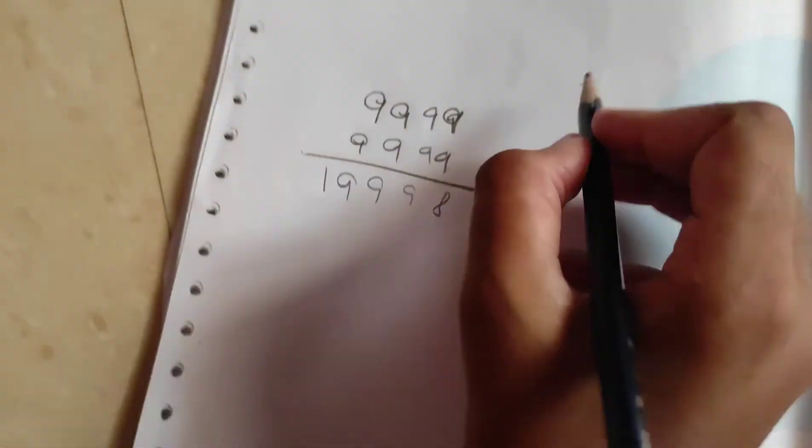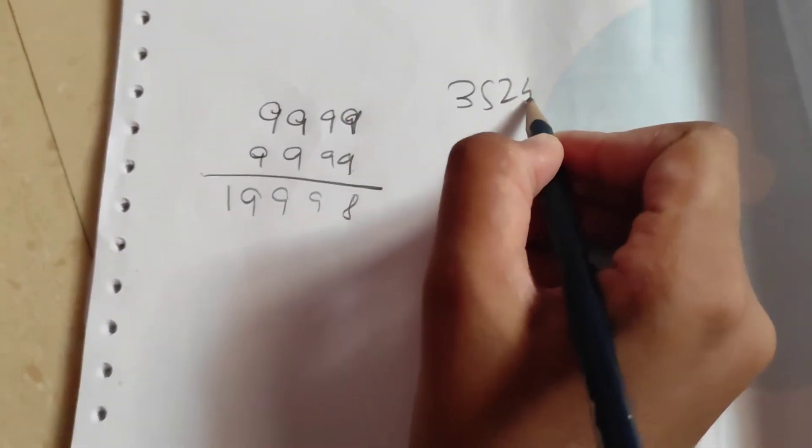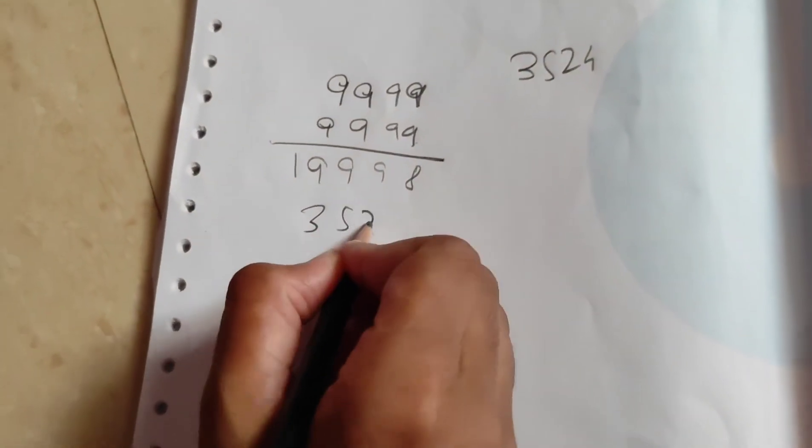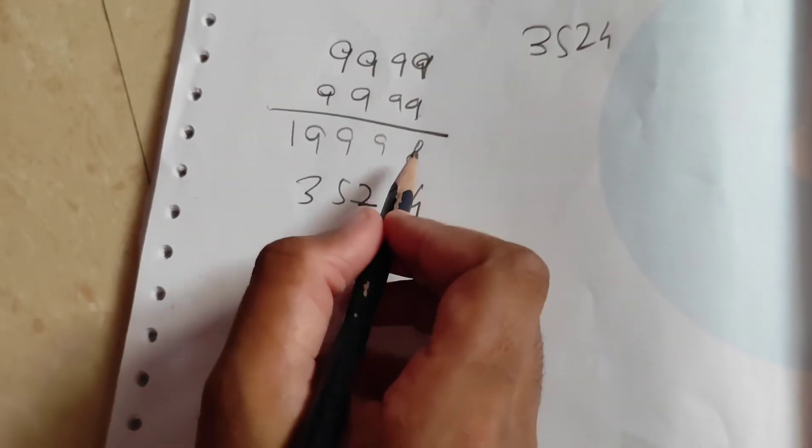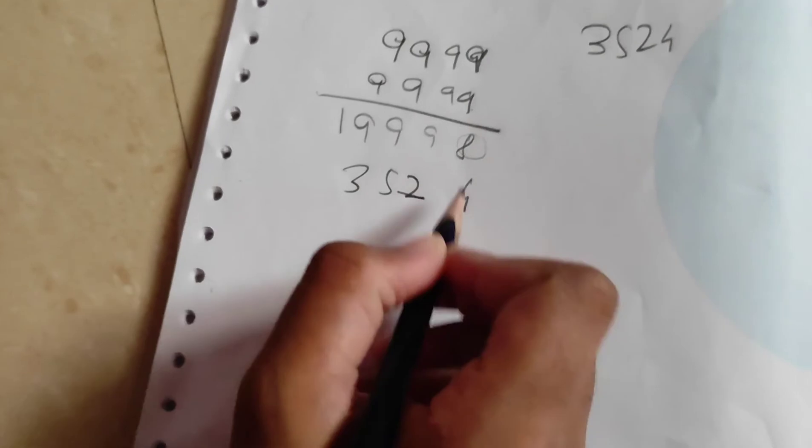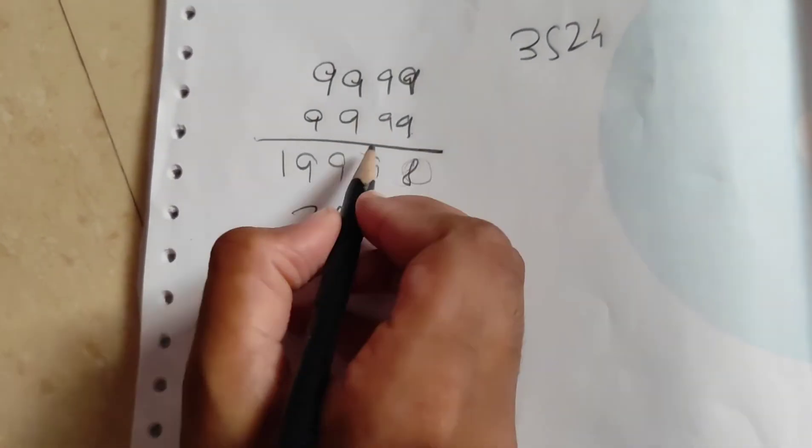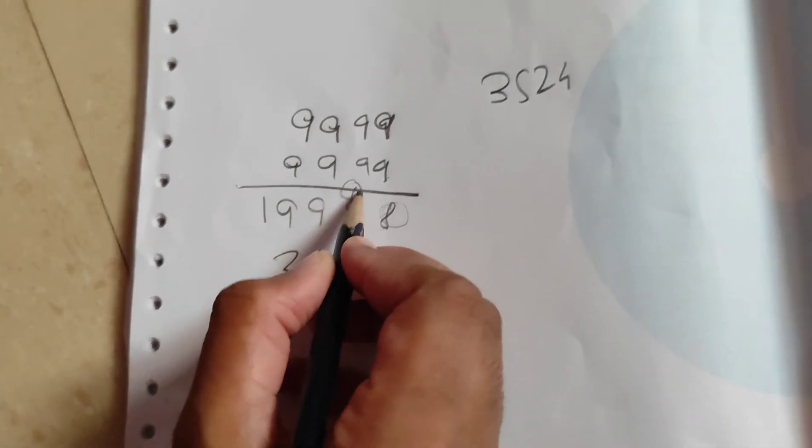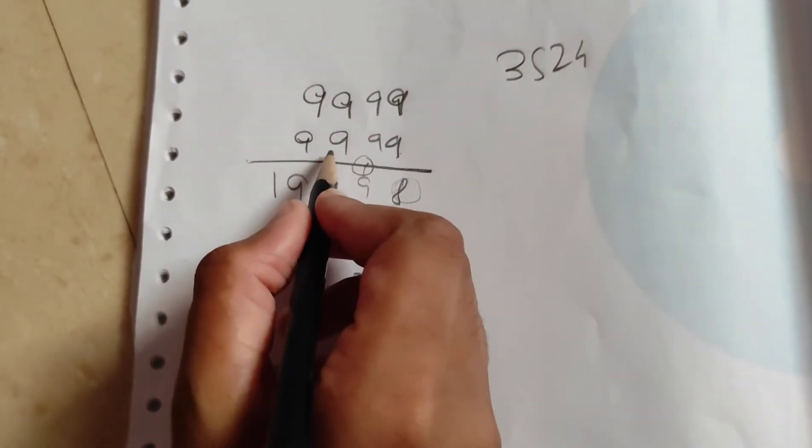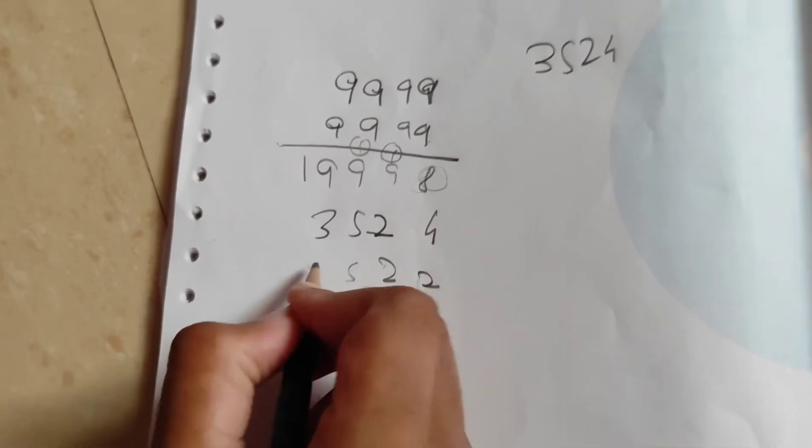When you add, suppose the starting number is 3, 2, 5, 2, 4. When you add 3, 5, 2, 4 to it, if you add 0 it will come as 4. But you are adding 8, which means it's making it a 2 less. So it becomes 2 and 1 goes there. So 1 plus 9 is 0. It's just like writing 2.